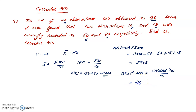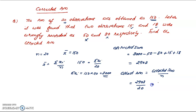The corrected arithmetic mean is 2903 divided by n, that is 20. The answer is 145.15. This is the corrected arithmetic mean.